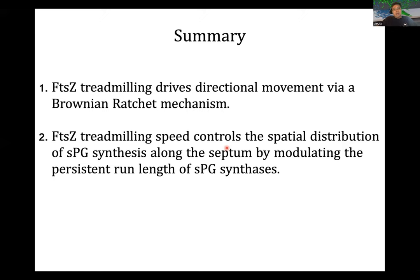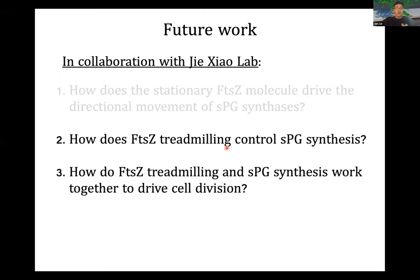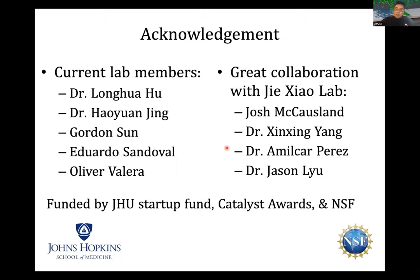The physical reason is that we can consider the FtsZ treadmilling as a train that positions the PG synthesis enzymes along the septum. The persistent run length is like the offloading distance between train stations — it increases when treadmilling speed increases up to a limit. Once offloaded from the Z-track, the enzyme can synthesize PG in either direction with equal probability. At a fast treadmilling speed, the offloading distance is large, so the inactivated enzyme carried away by FtsZ can get reactivated further away, causing PG synthesis to spread out; at a slow speed, the offloading distance is short, so PG synthesis clusters together. Therefore, the model suggests FtsZ treadmilling speed may be selected to maximize persistent run length so that PG synthesis spreads evenly along the septum.